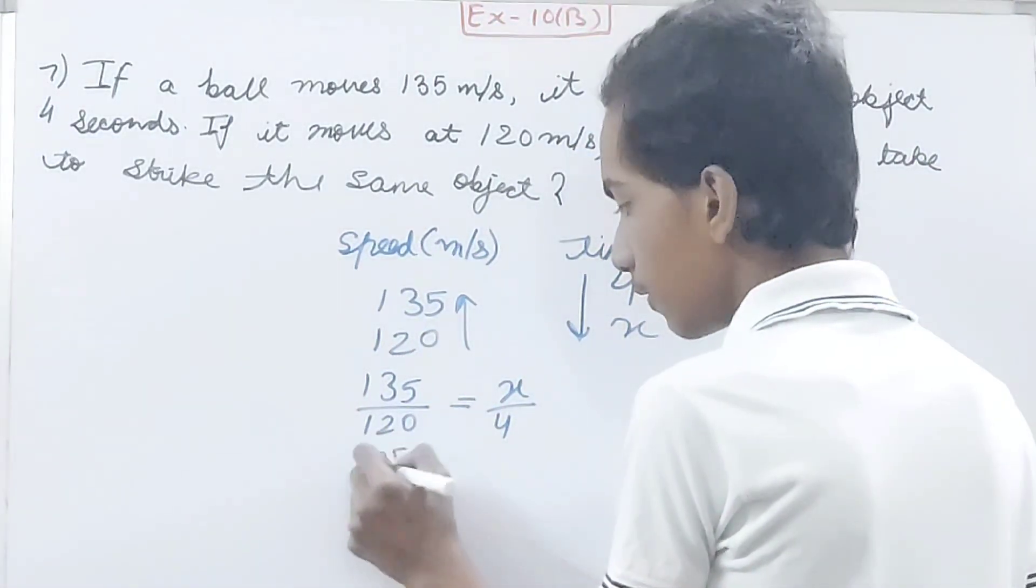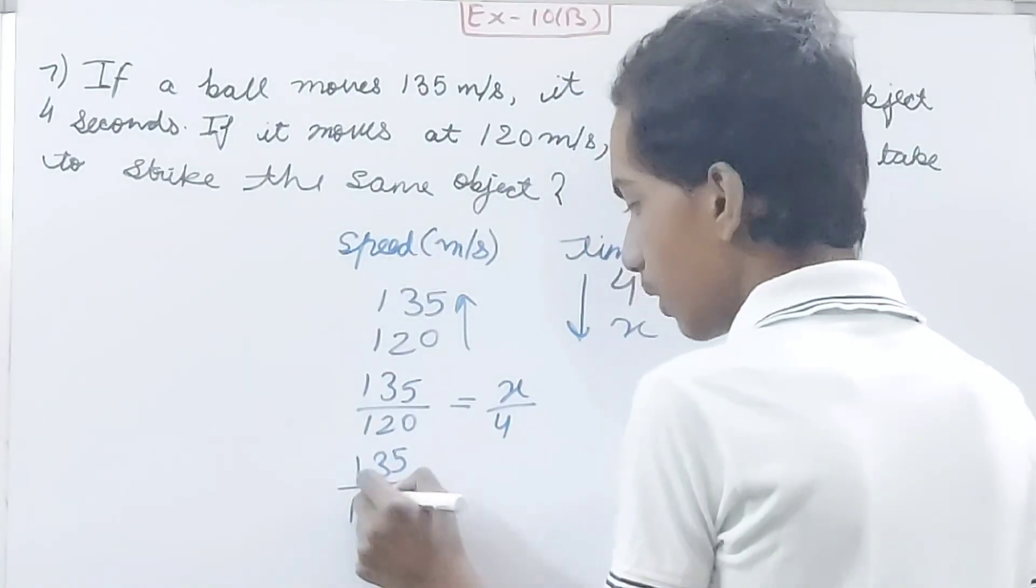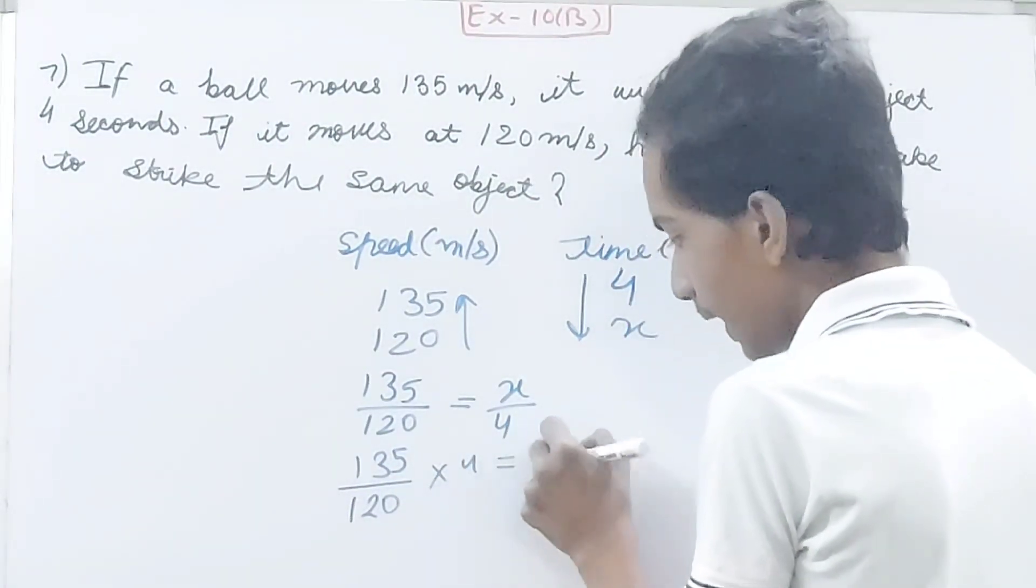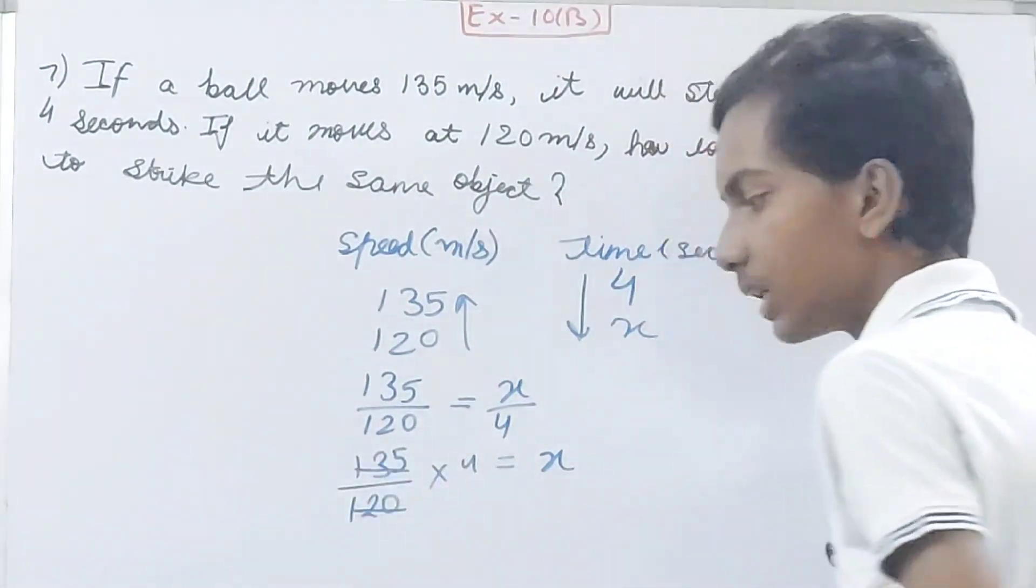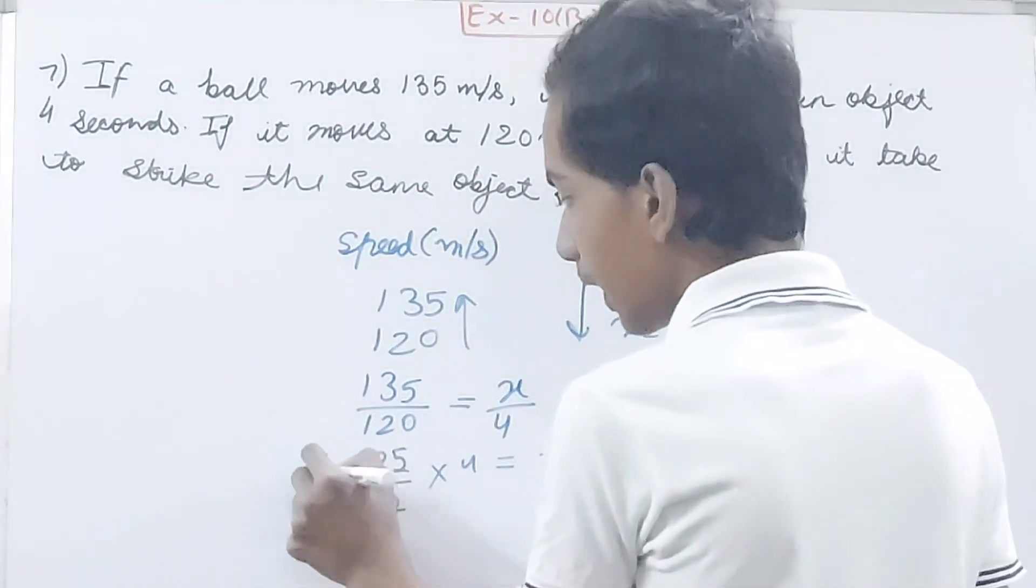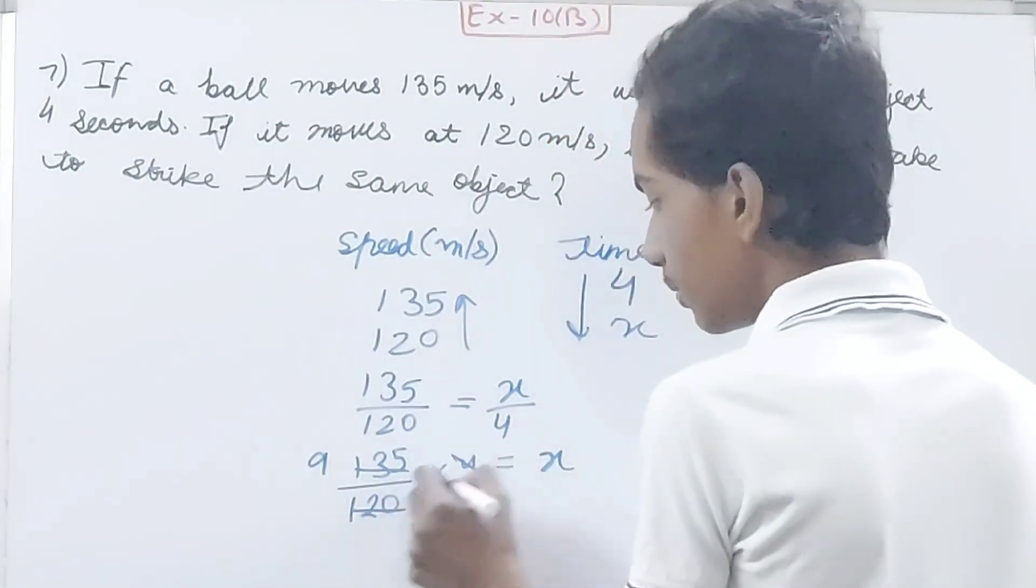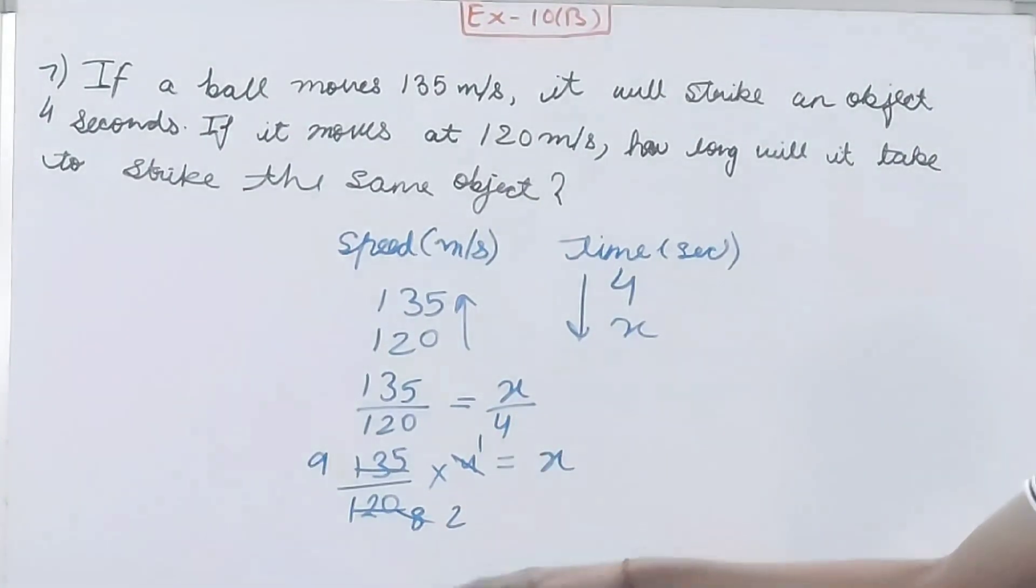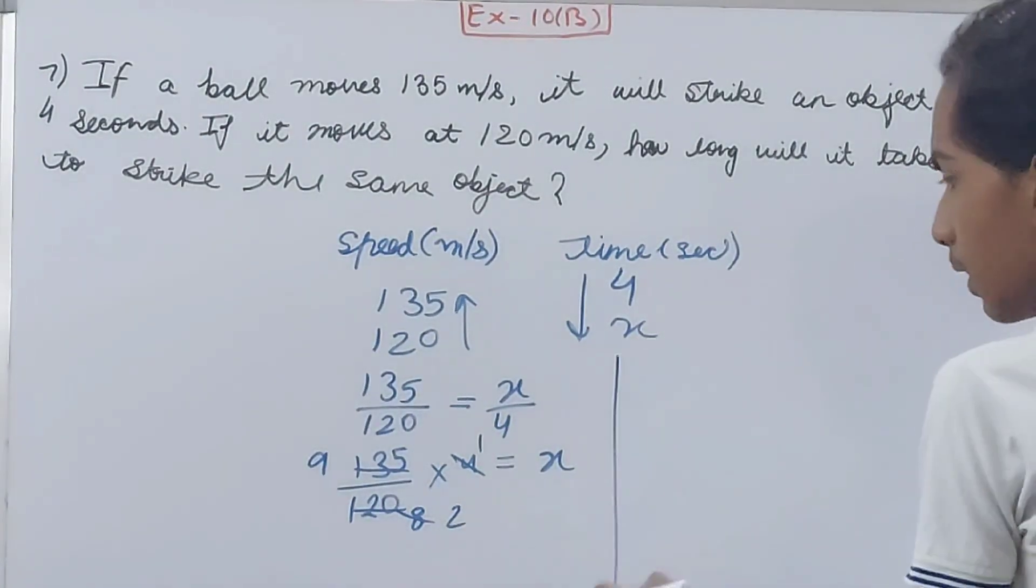I can cancel 135 and 120 by 15. 135 will go 9 times, 120 will go 8 times. This and this I can cancel, 1 and 2. So x is equal to 9 by 2.